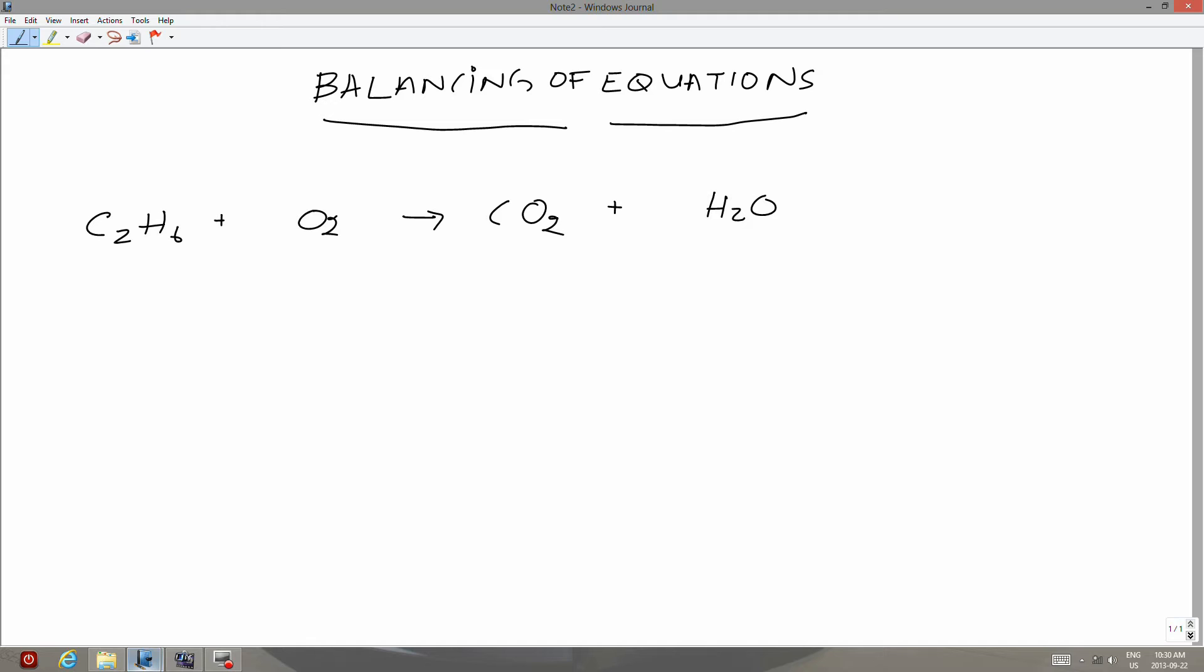So whenever you're balancing an equation using trial and error, the first element to pick would be the element that forms a single compound. So it could either be carbon or hydrogen.